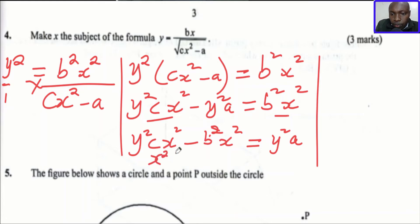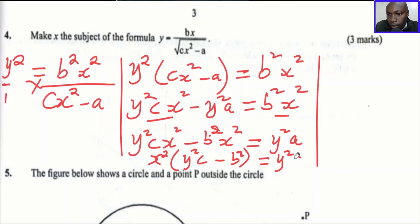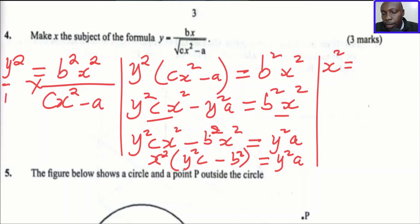After doing that, x squared is common so we factor out x squared. When you factor out x squared you remain with y squared c minus b squared, equals y squared a. Since we're making x squared the subject, we divide both sides by y squared c minus b squared, so x squared equals y squared a divided by y squared c minus b squared.